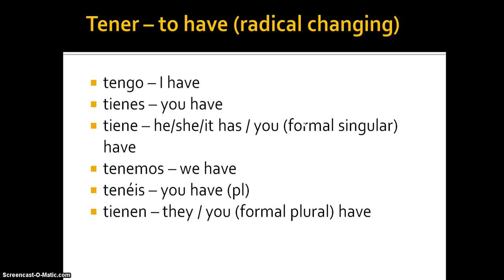Now let's look at the verb tener, to have — which is a radical-change verb. For more detail, see my video on radical-changing verbs. The conjugation: tengo means I have; tienes means you have; tiene means he, she, it has, or you formal singular have; tenemos means we have; tenéis means you have, plural — tienes is singular informal, tenéis is plural informal; and tienen means they have, or you formal plural have.